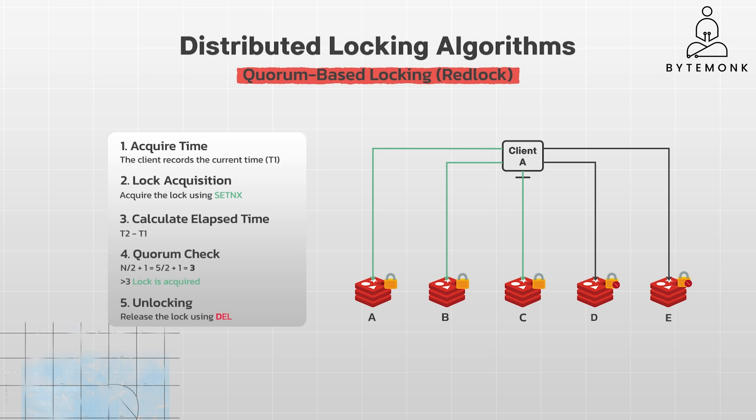For example, if the client successfully acquires locks on instances A, B, and C within the validity time, the lock is considered acquired because it has a majority. If the client crashes before releasing the lock, the locks on A, B, and C will eventually expire due to the TTL, allowing another client to acquire the lock. The quorum requirement ensures fault tolerance — even if one or two Redis instances fail, the lock can still be acquired and released correctly as long as a majority of instances are operational.